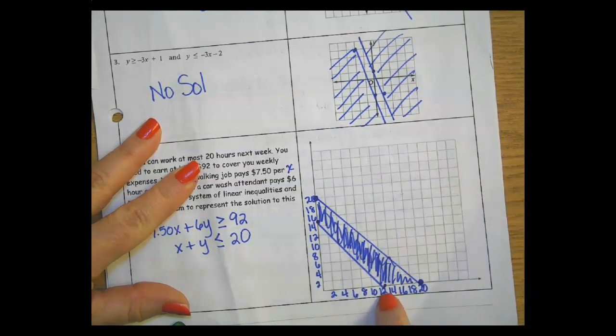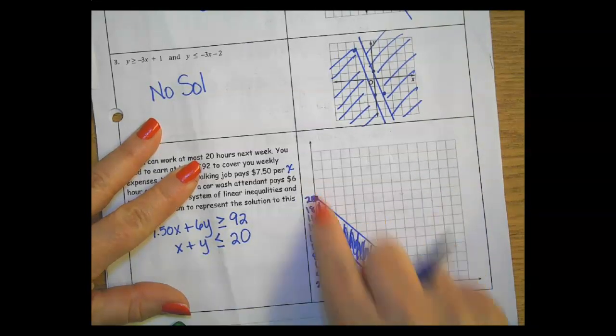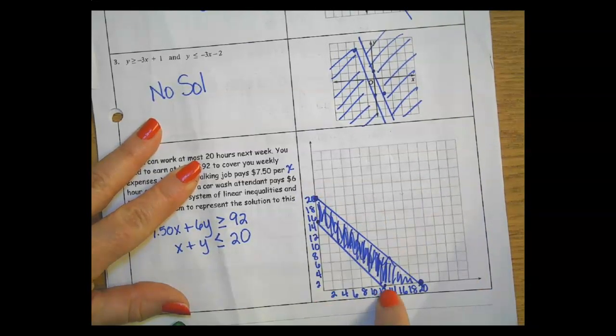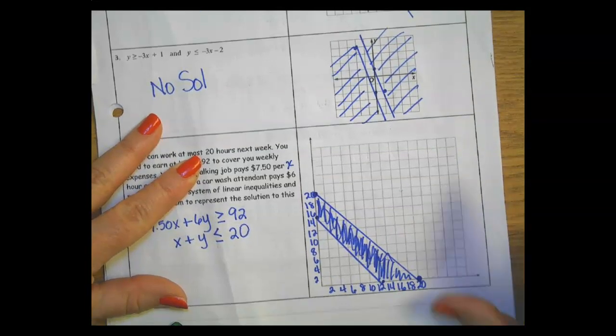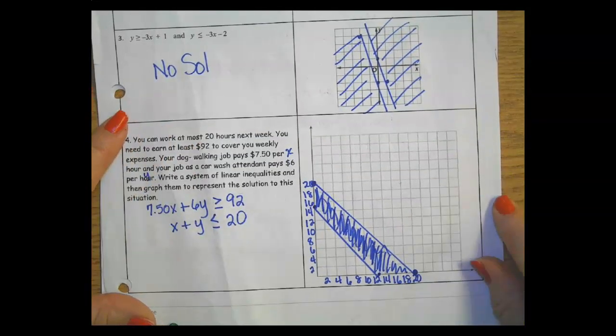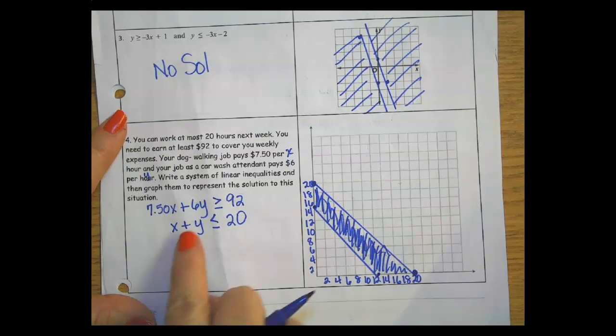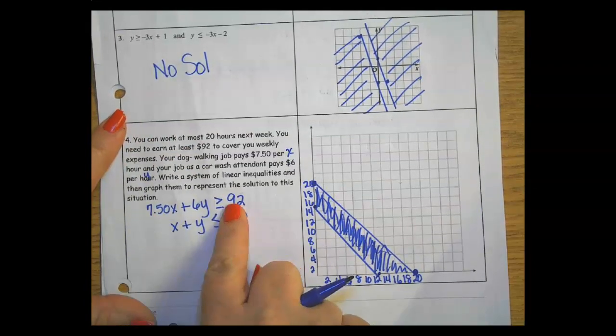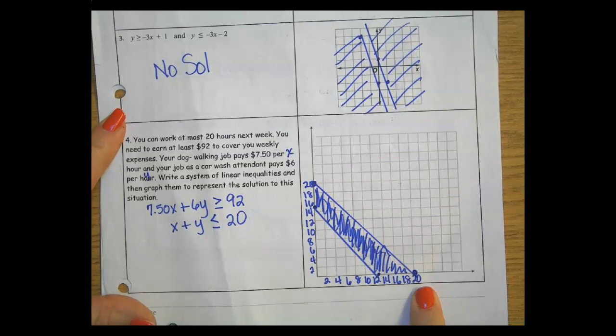She can work 0 hours at this job and 12 hours at this job, or she can work any combination of these solutions that is inside here. That's how you would do that. The key is making sure you know how to do this and how to do this in Desmos.